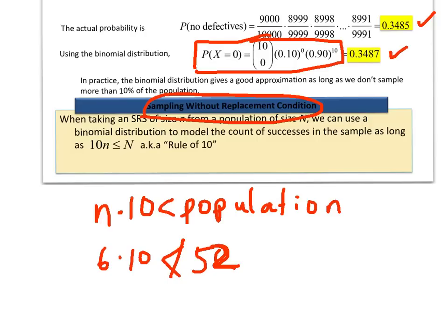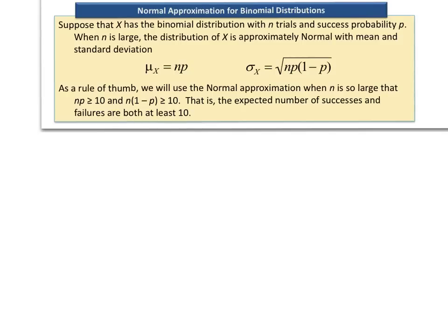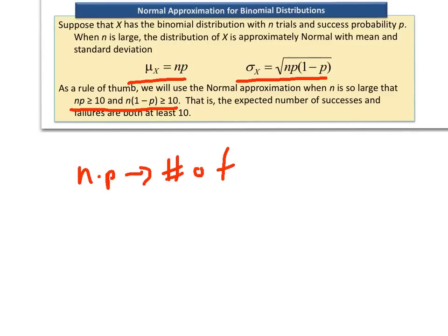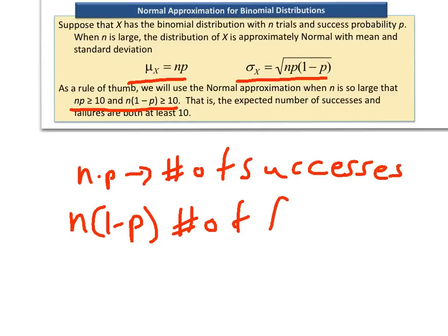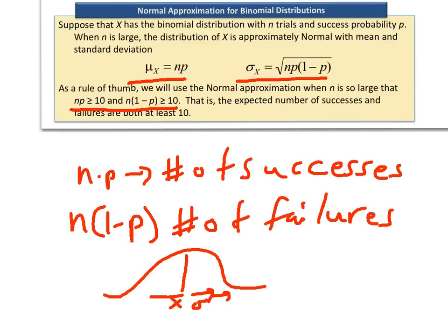As a quick review: for binomial distributions, the mean is your sample size times your probability of success, and the standard deviation is the square root of your sample size times probability of success times probability of failure. We will use the normal approximation whenever both n times p (number of successes) and n times 1 minus p (number of failures) are greater than or equal to 10. When that condition is met, we get to draw a nice bell curve, find our mean and standard deviation, and use a z-score.